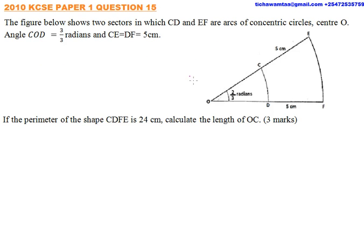Here we are given a figure made up of concentric circles and we are given the angle COD, it is 2/3 radians, this angle here.